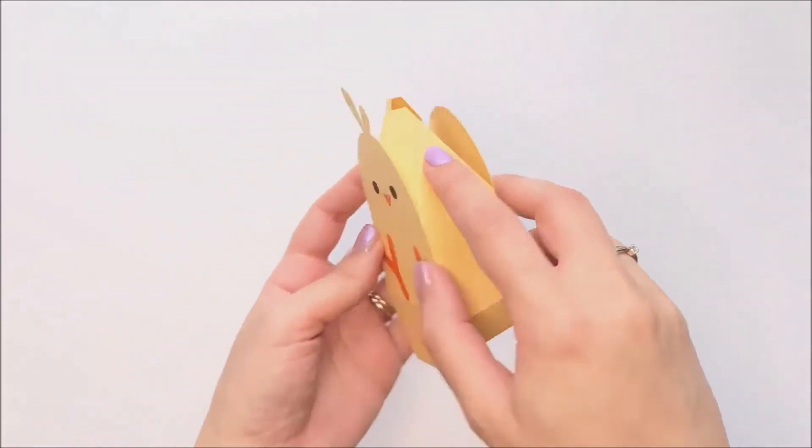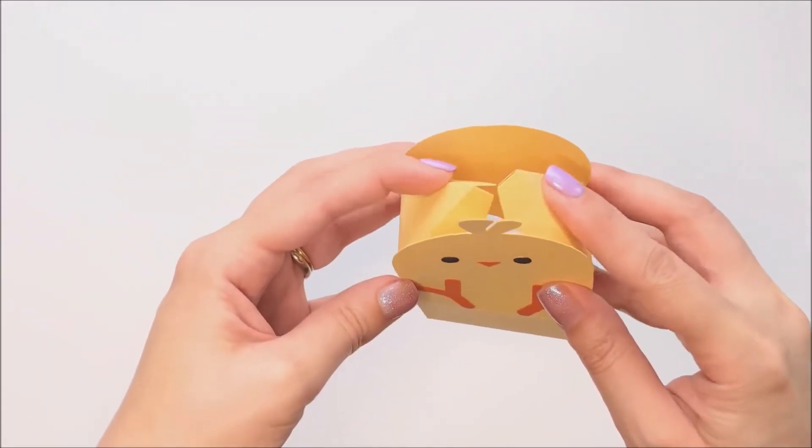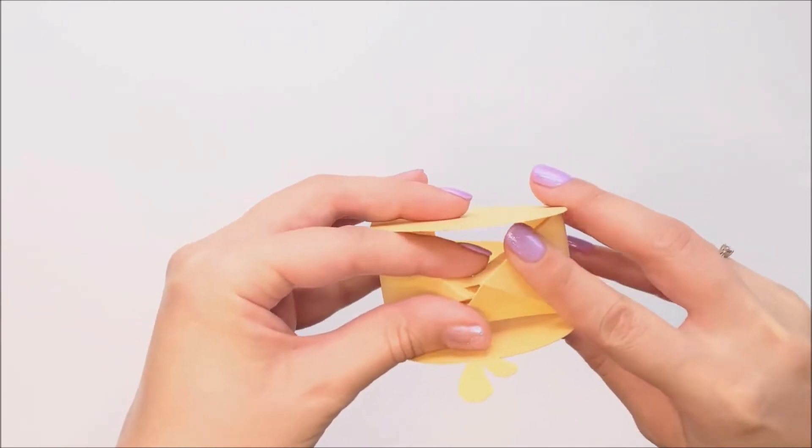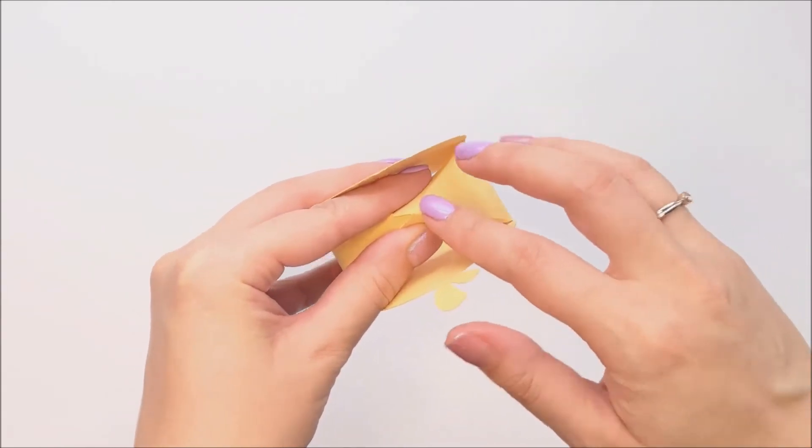Next we're going to bring in the sides. So we're going to bring these together in the middle to form a point. And if you like, you can use a little dot of glue to keep them at that point.